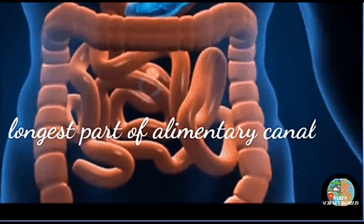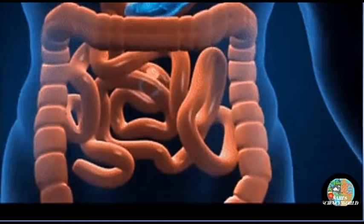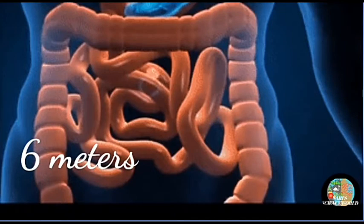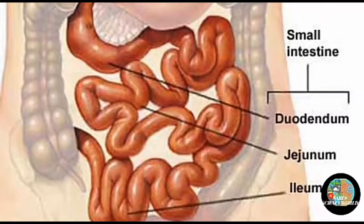The small intestine is the longest and narrow tubular part of the alimentary canal. It measures about 6 meters in length. The three divisions of the small intestine are: duodenum, jejunum, and ileum — the first part is the duodenum, the middle part is the jejunum, and the last part is the ileum.